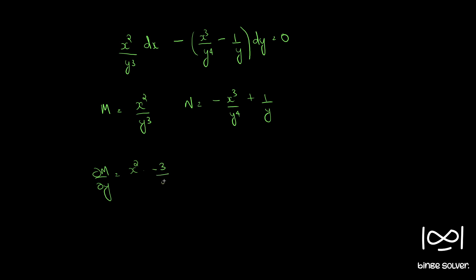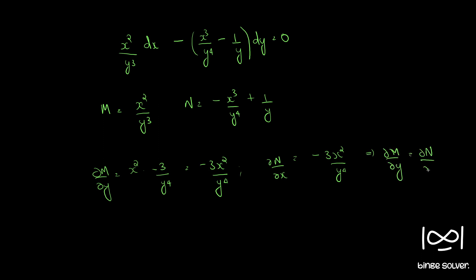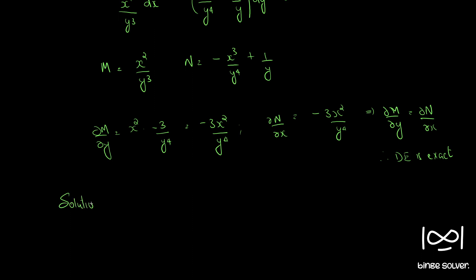So ∂M/∂y equals minus 3x squared over y to the 4th. This implies ∂M/∂y equals ∂N/∂x. Therefore this differential equation is now exact. Now we can find the solution. The solution is given by the integral of M dx where y is considered constant, plus the integral of terms in N without x, dy, equal to c.